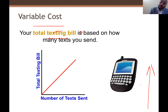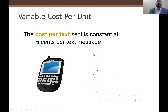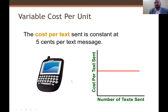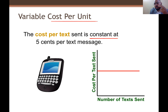So the behavior of variable cost is: if production increases, cost also increases — a linear relationship. If the cost per text is five cents, the more you text, the more you pay. On total basis, variable cost increases with quantity. But when we look at variable cost per unit, its behavior changes.